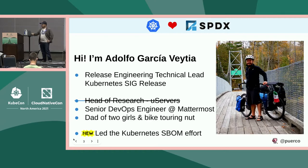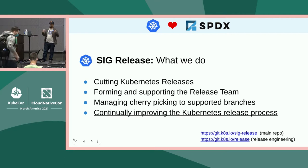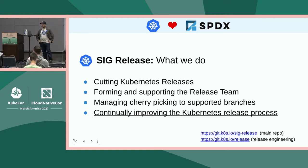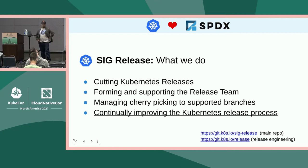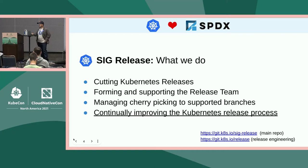At the beginning of this year I led the effort to produce an SBOM for Kubernetes. So let's talk a little bit about SIG Release and what we do. SIG Release is the special interest group that does the Kubernetes releases. Whenever you see a new Kubernetes patch release or a new version coming out, we are the people that work to make that happen. We also form the Kubernetes release team managed by the Kubernetes release lead, and we manage the actual decisions about what gets cherry-picked to the supported branches of Kubernetes. We are also tasked with continually improving the Kubernetes release process to keep up with best practices and standards.